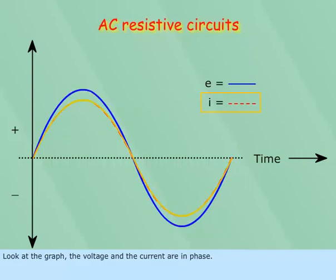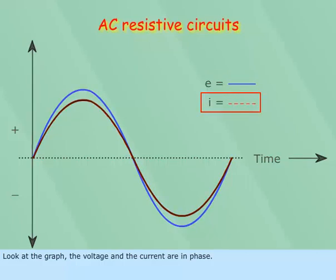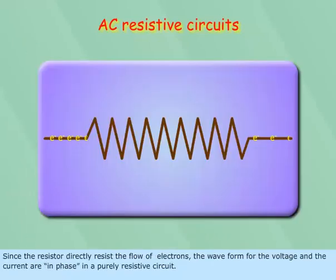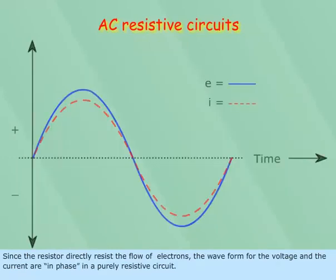The voltage and the current are in phase. Since the resistor directly resists the flow of electrons, the waveform for the voltage and the current are in phase in a purely resistive circuit.